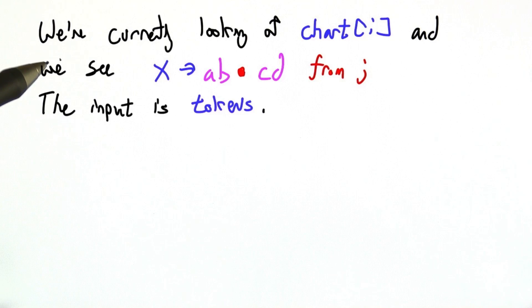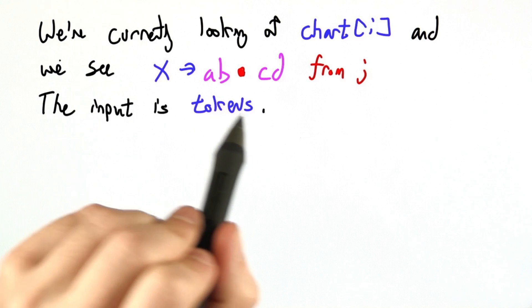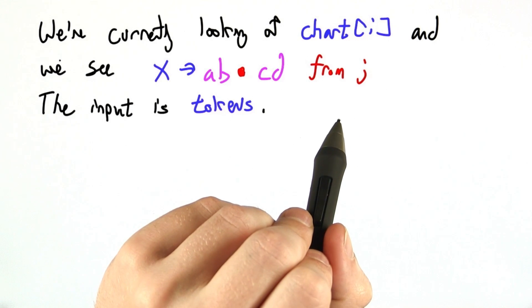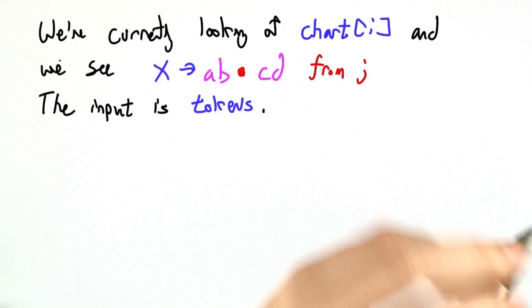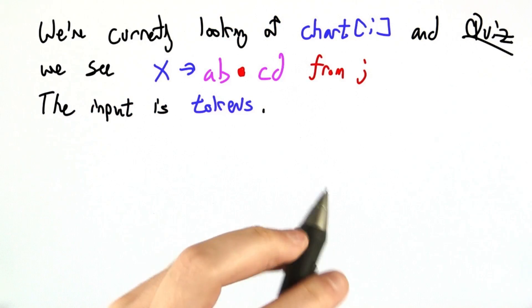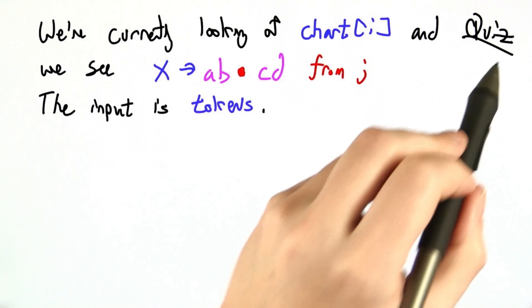We've seen before that there are three ways to build up the chart. One is by calling the closure or predicting, the next is by shifting, and the third is by performing reductions. I'm going to have you do all three, and this is the second one, shifting.